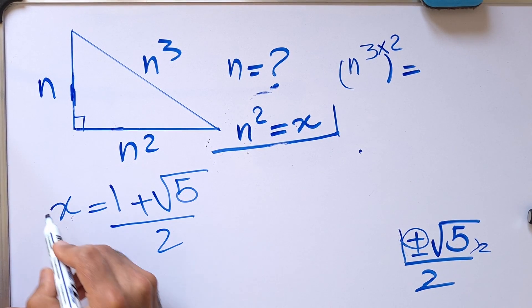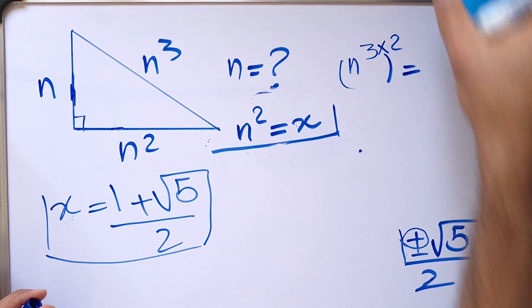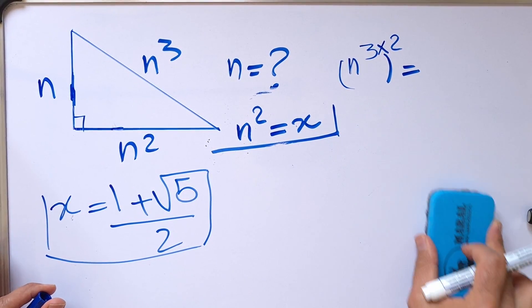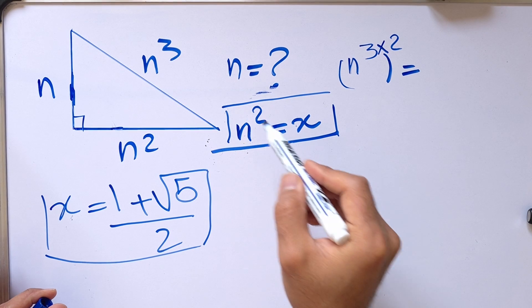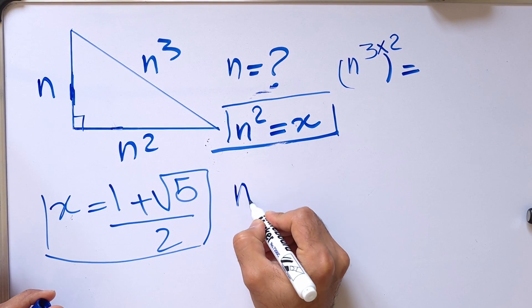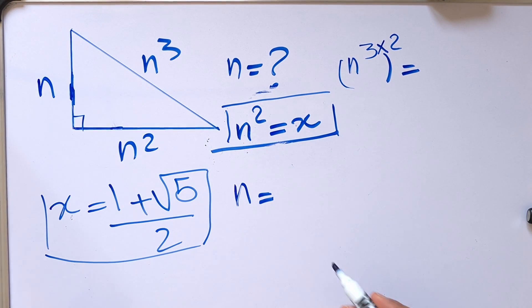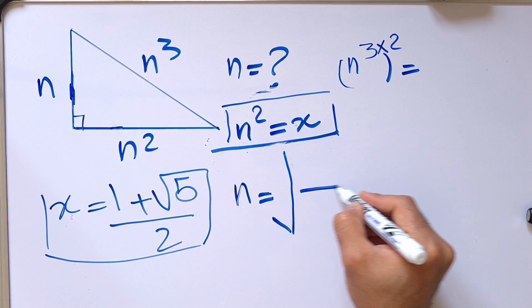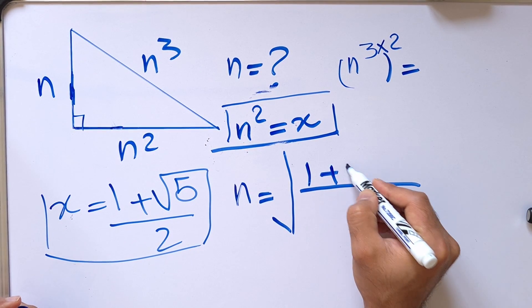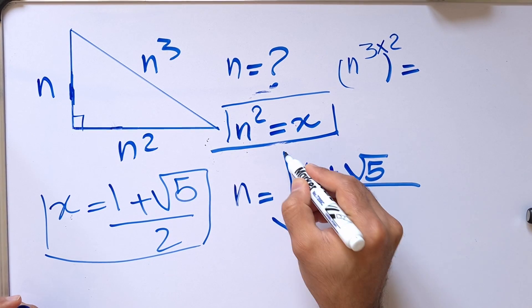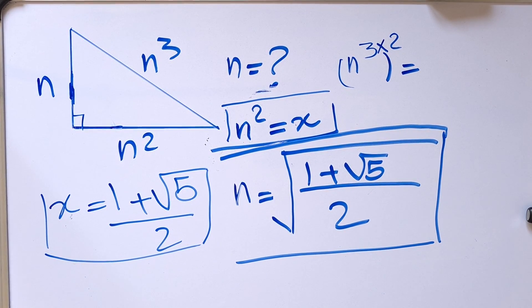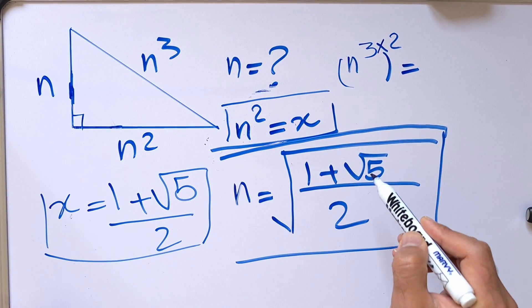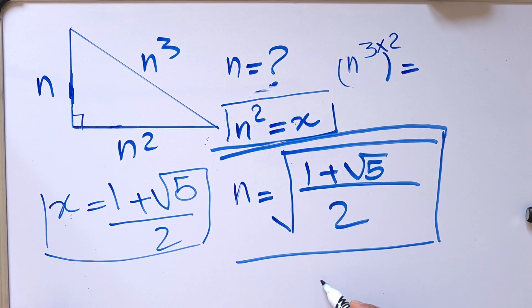The correct value of x is 1 plus root 5 over 2. But since we need to find n, and we assumed n squared equals x, we take the square root: n equals the square root of the quantity 1 plus root 5 over 2. We accept only the positive root because a negative n is not acceptable in geometry.